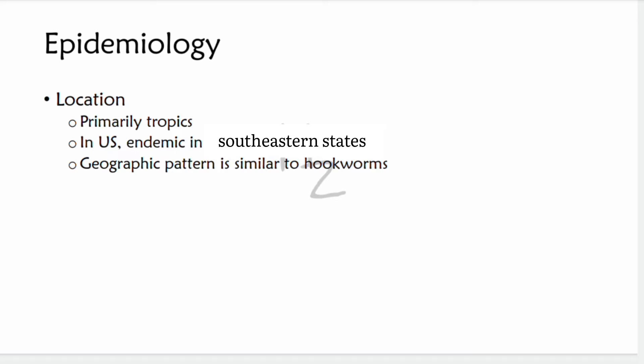In hyperinfection, the penetrating larvae may cause sufficient damage to the intestinal mucosa that sepsis caused by enteric bacteria — such as Escherichia coli and Bacteroides fragilis — can occur. Epidemiology: strongyloidiasis occurs primarily in the tropics, especially in Southeast Asia. Its geographic pattern is similar to that of hookworm, because the same type of soil is required. In the United States, strongyloidiasis is endemic in the southeastern states.